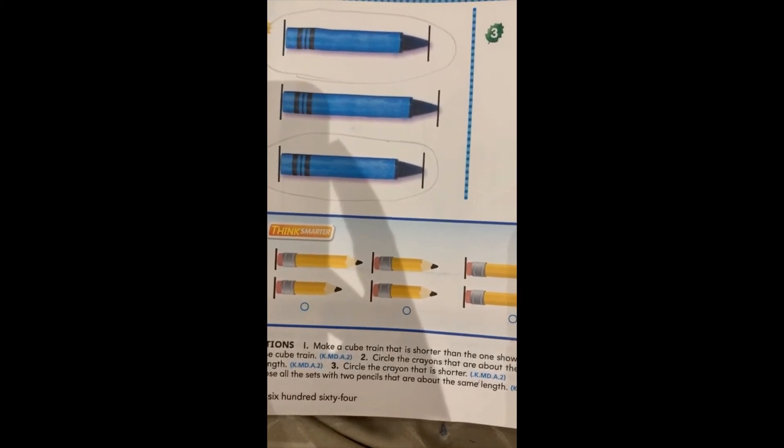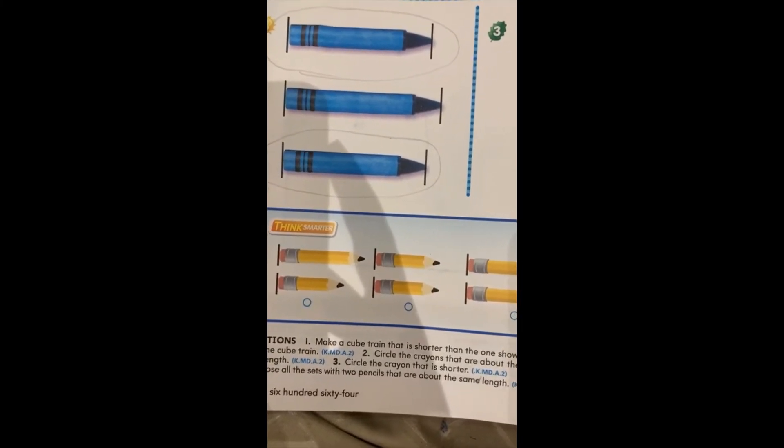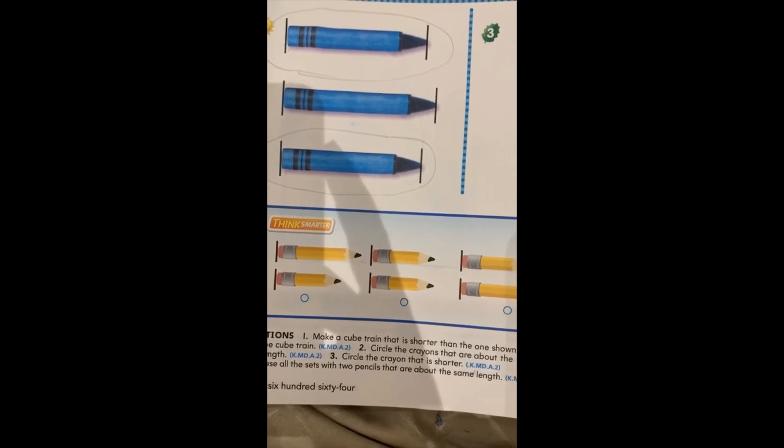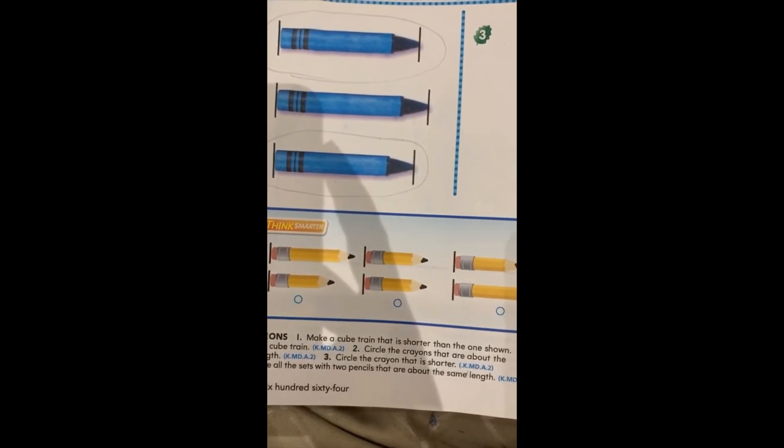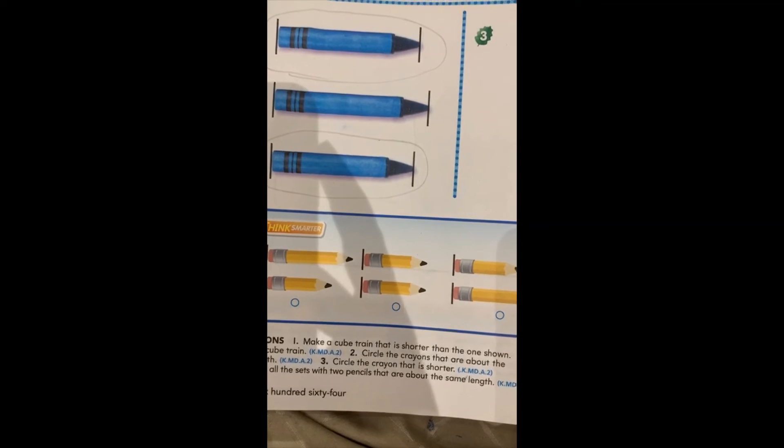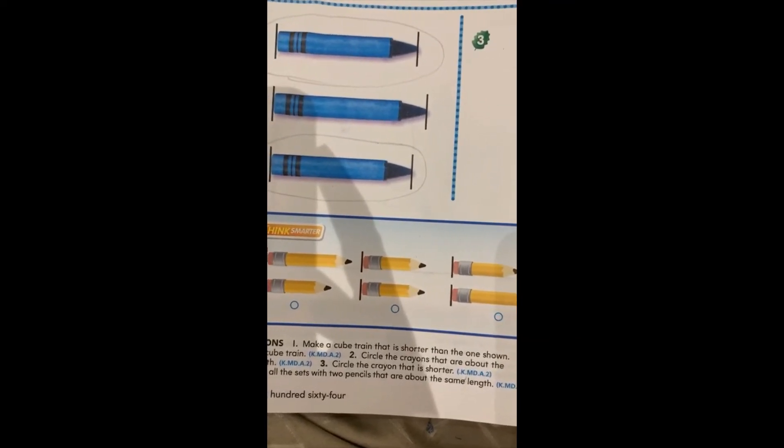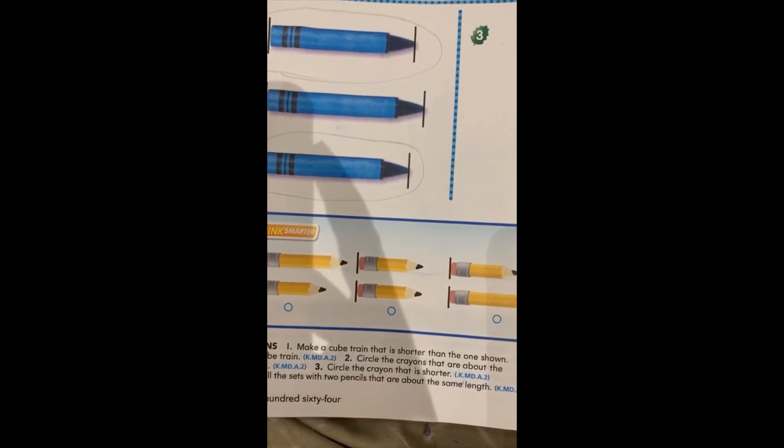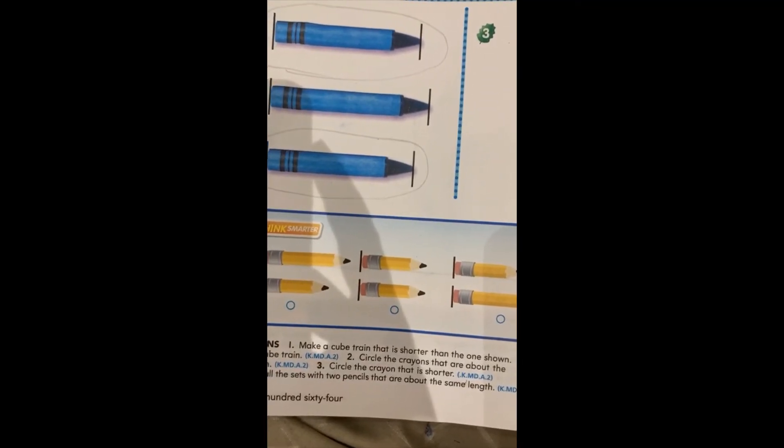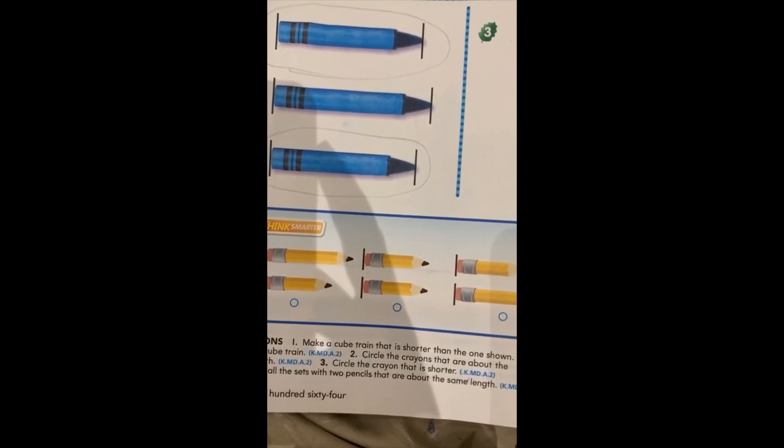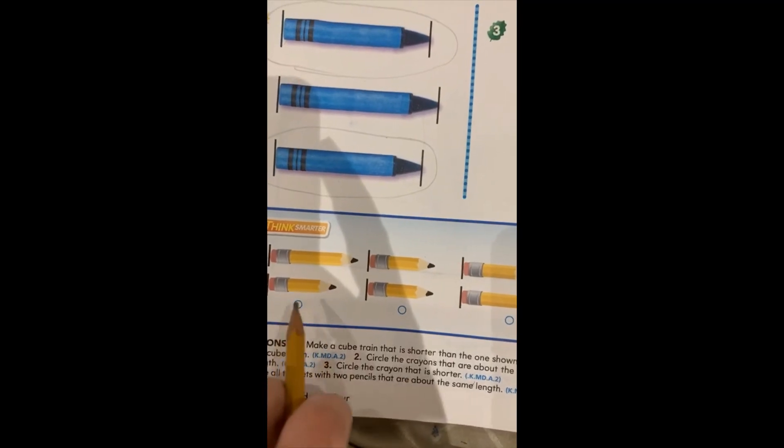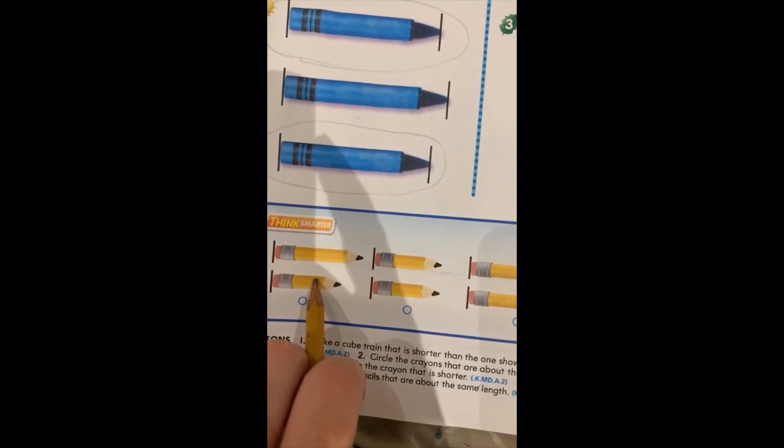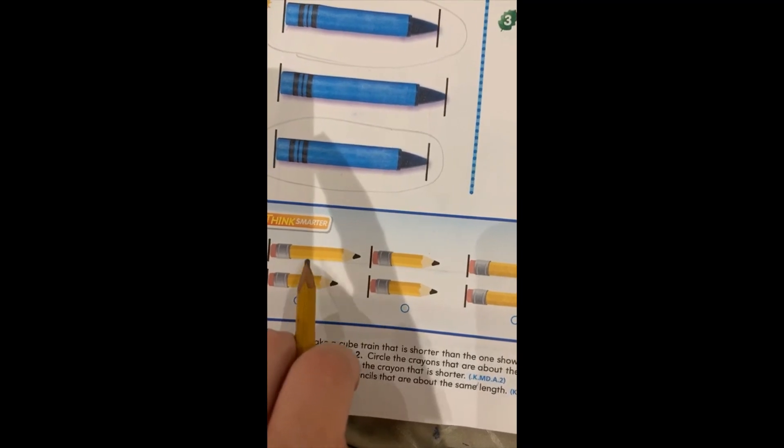Now, the last exercise. Here, we have to choose the sets with two pencils that are about the same length. Again, the same length means when the two objects start and end at the same place. Are these about the same length? No. One is short and one is tall. They are not about the same length.